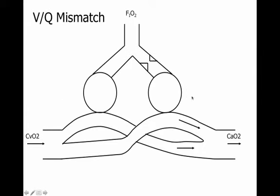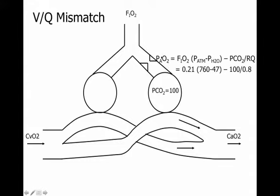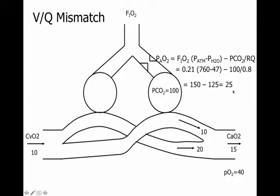Here's an example of VQ mismatch: I'm not ventilating one particular lung unit, so PCO2 rises to 100 in that unit. Working through the alveolar gas equation breathing room air with a PCO2 of 100, PAO2 drops to 25. Mixed venous comes back at 10. The stuff going by the normal alveolus gets oxygenated and comes out with a content of 20. The stuff going by this poorly ventilated side sees a PAO2 of only 25, so not much changes—it comes out the other side at a content of 10. When they mix, you can't average saturations; you must average contents. Arterial content becomes 15, PaO2 equals 40. That's VQ mismatch.